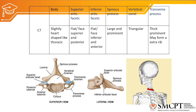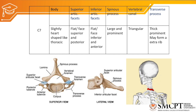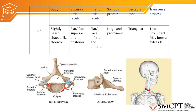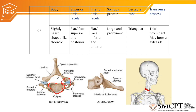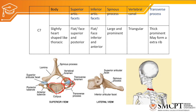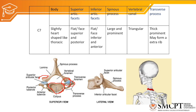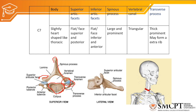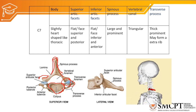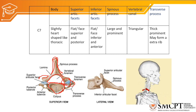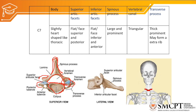The third atypical vertebra is C7. The body of C7 is slightly heart-shaped, resembling a thoracic vertebra. The superior articulating facet is flat and faces superiorly and posteriorly, while the inferior articulating facet is also flat and faces inferiorly and anteriorly. The spinous process is the most prominent in the cervical region — large and prominent. The vertebral canal is triangular, and the transverse process is prominent and may have an extra growth called a cervical rib.